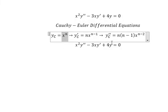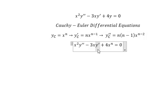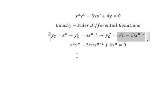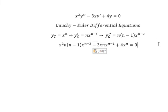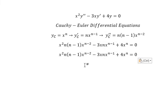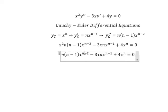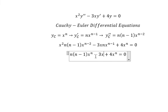Now we substitute these into the equation. x squared multiplied by x to the power of n minus 2 gives us x to the power of n, and similarly for the other terms. We can factor out x to the power of n.